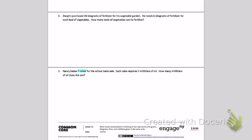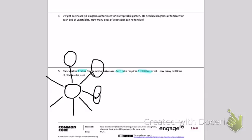So Nancy's going to bake 7 cakes. Each cake needs 5 milliliters of oil. So we have a total with 7 cakes.